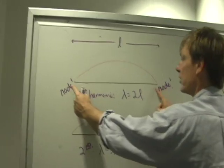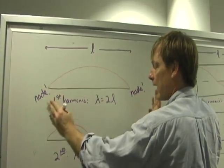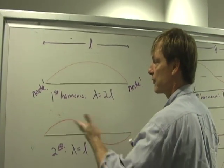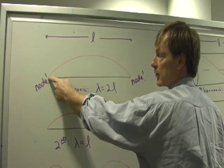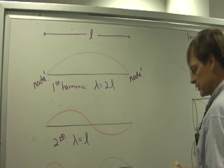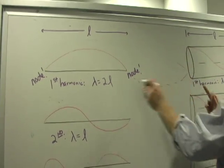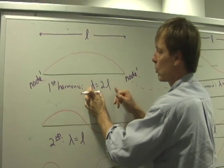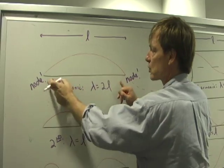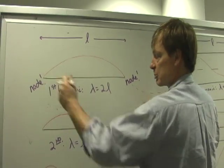These are fixed ends, so they're nodes. All I have to do is make sure that there are nodes right there. So the first way I can get one node in is for half a wave. And you see, if I continue that wave, that would be a whole wave. So my wavelength here is twice the length of the distance between my hands.